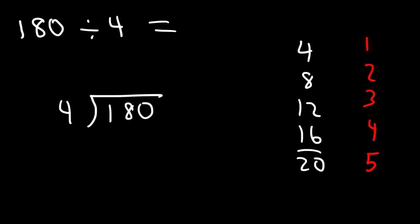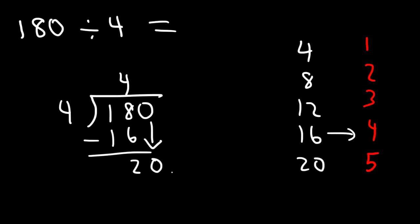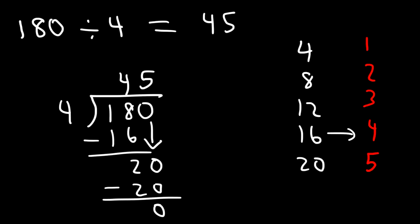20 exceeds 18, so we can say that 4 goes into 18 four times — 4 times 4 is 16. We have to pick the highest number just under 18. Now 18 minus 16 is 2, and we need to bring down a 0. So how many times does 4 go into 20? 4 goes into 20 exactly 5 times, 4 times 5 is 20, and the remainder is 0. So our answer is 45 — that's the quotient.